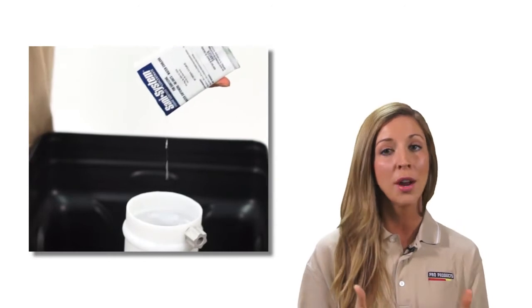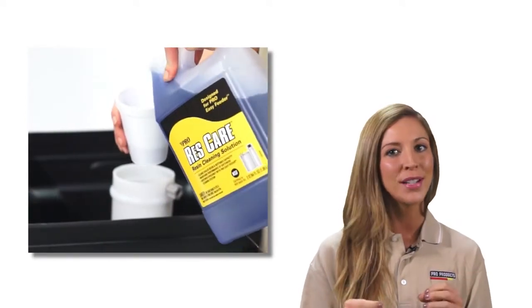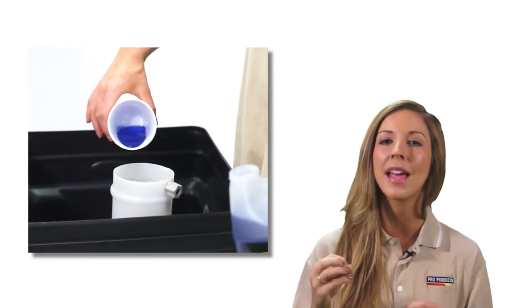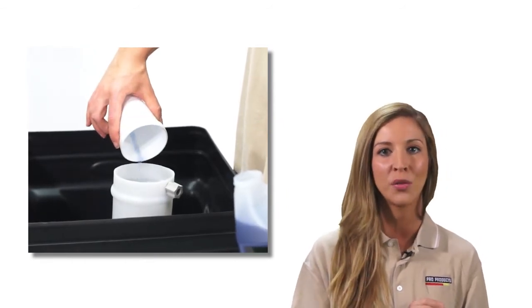If you don't use an automatic feeder, now would be the perfect time to add 4 ounces of ProRes Care to the brine well to help nearly double your unit softening power.